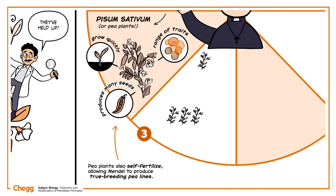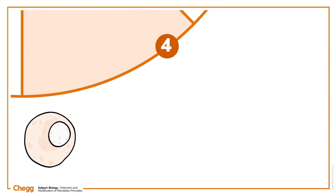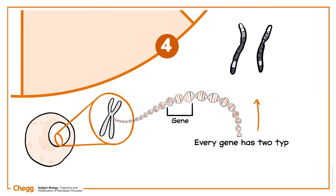When he crossed true-breeding tall plants with true-breeding dwarf plants, rather than finding a blend of the traits, he found that the offspring in the next generation, F1, were all tall. Then, after crossing these offspring, the dwarf plants bizarrely resurfaced, with a 3 to 1 ratio of tall to dwarf plants in the F2 generation. Mendel concluded that heritable traits are determined by heritable factors called genes. Every gene has two types of alleles, or units, present.